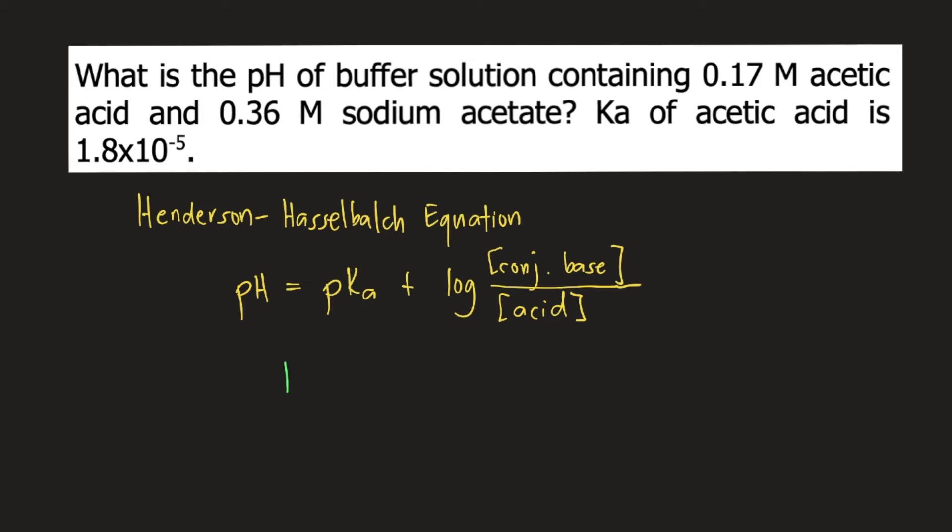So how do you solve the pKa if you are given the Ka? pKa is equal to negative log of the Ka. So pKa is equal to negative log of 1.8 times 10 raised to negative 5, and that is equal to 4.7447.